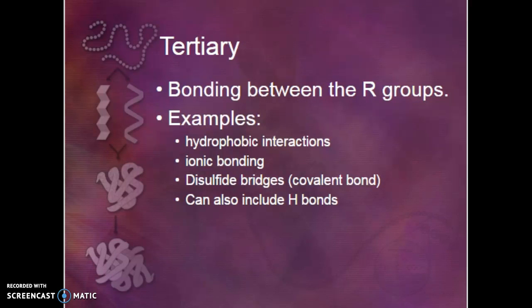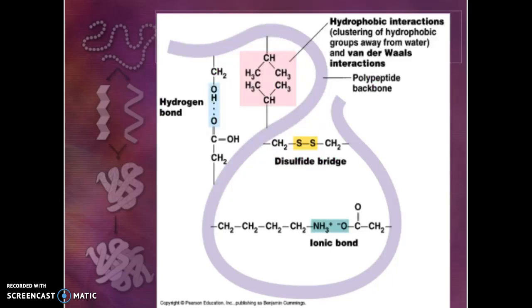Our tertiary structure is going to be bonding between the side chains. We're going to get things like hydrophobic interactions causing two molecules to buddy up so that they don't have to mess with water. You're going to get ionic bonding because some of these R groups are charged. Some of them are acidic, some of them are basic. You're going to get disulfide bridges. If you happen to get two sulfurs next to each other, they're going to form a covalent bond and share their electrons.